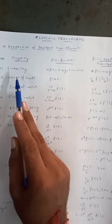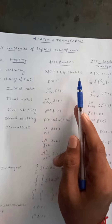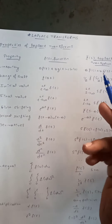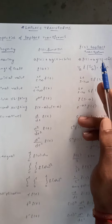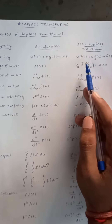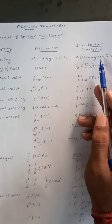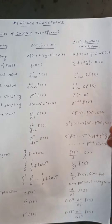The first property is linearity: a·f(t) + b·g(t) − c·h(t), after taking the Laplace transform, equals a·f̄(s) + b·ḡ(s) − c·h̄(s).